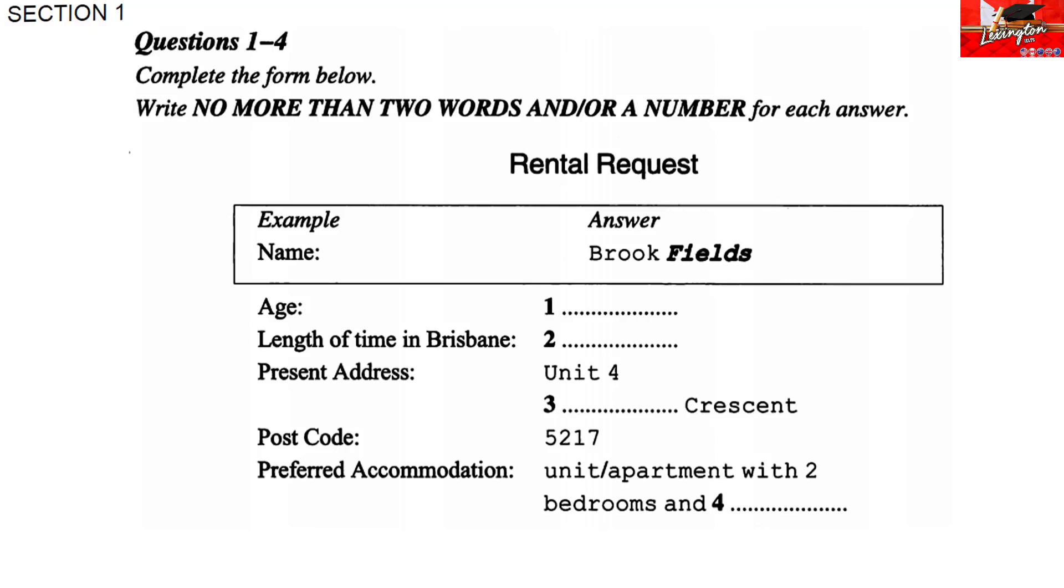Now, what's your current address? Unit 4, 5, Tradewinds Crescent. But I'm only there for three more weeks. I've given notice already. I'm going to have to move quickly to find you something soon. What's the postcode for Tradewinds Crescent? 5217. Thank you.